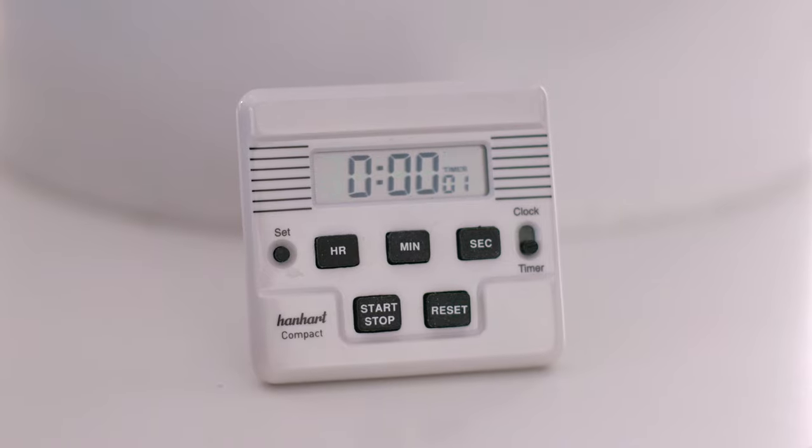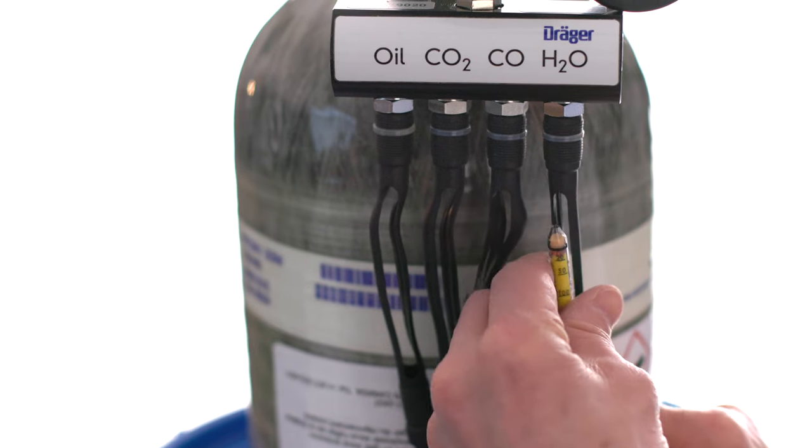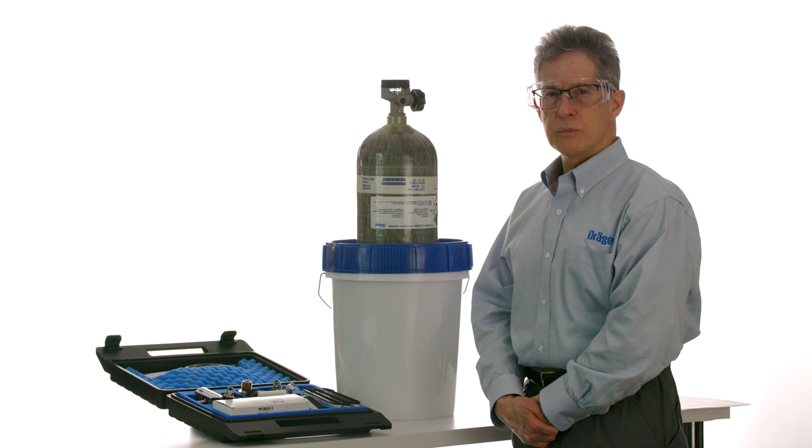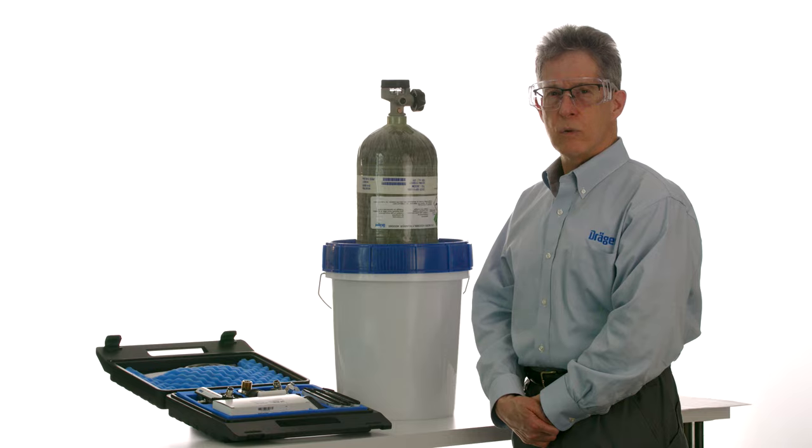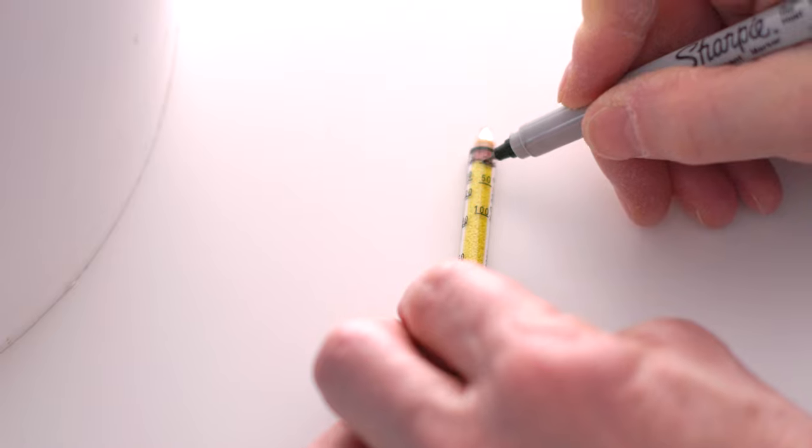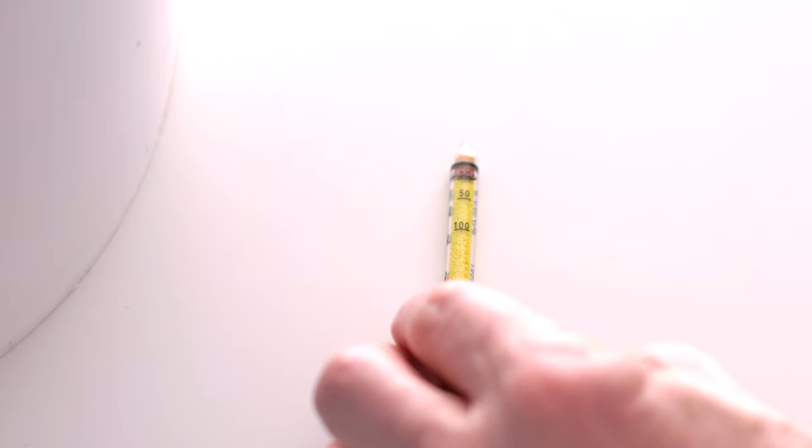When the alarm goes off, remove the water vapor tube and immediately evaluate the reddish-brown discoloration on the tube. Compressed breathing air requires the use of a 10-minute test using the 20 to 250 scale. This tube shows a discoloration less than 20 milligrams of water per cubic meter.